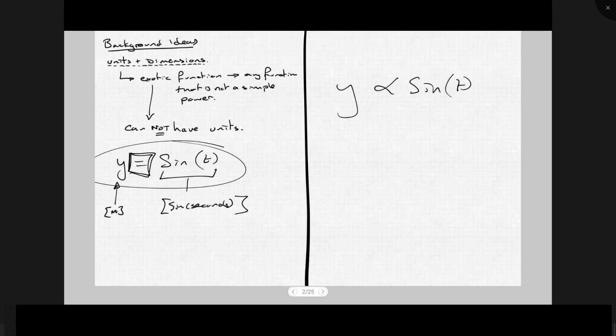So what we must have is something here, like an A, which is the amplitude. And that has the same units, meters. So now I've got meters equals meters times sine seconds. I need to get rid of the sine seconds. The way that I get rid of the sine seconds, there's two different ways of doing it.